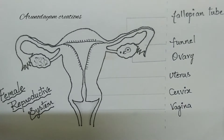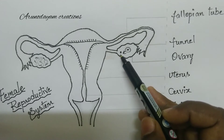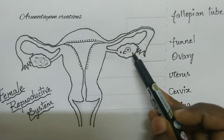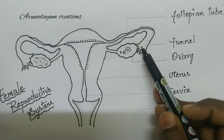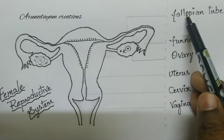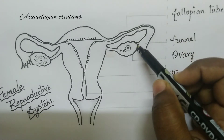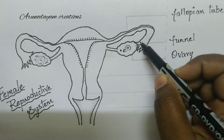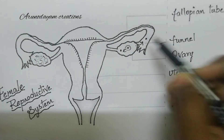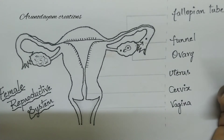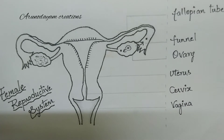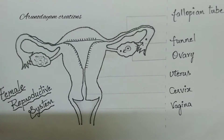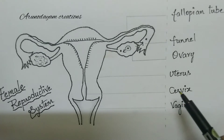After ovulation, the ovum released into the ovary then enters into the muscular tube-like structures called fallopian tubes. It will wait in the fallopian tube for 24 hours for fertilization.